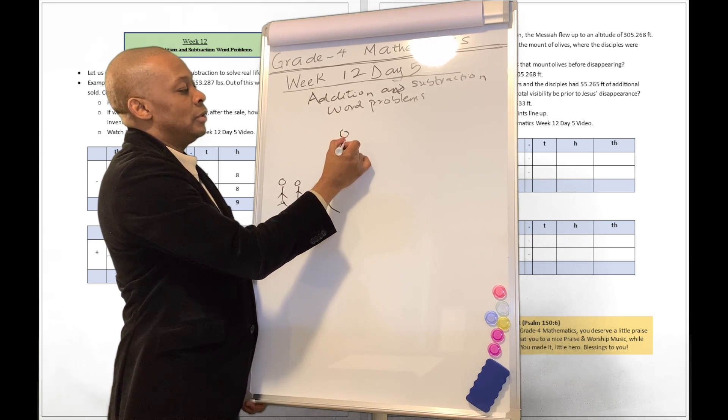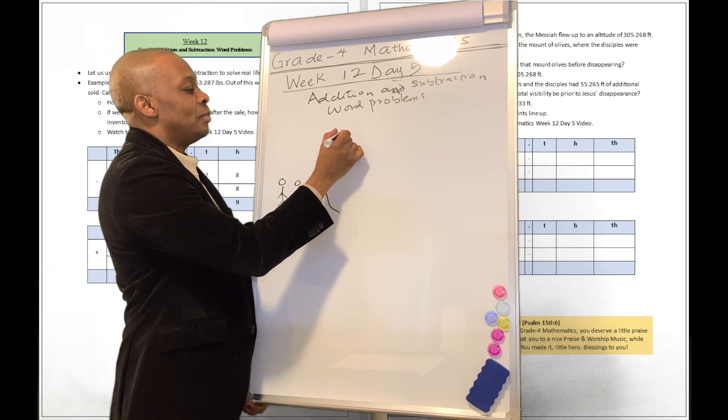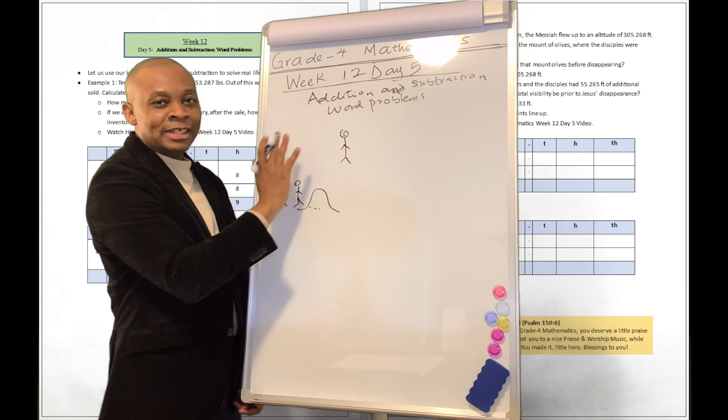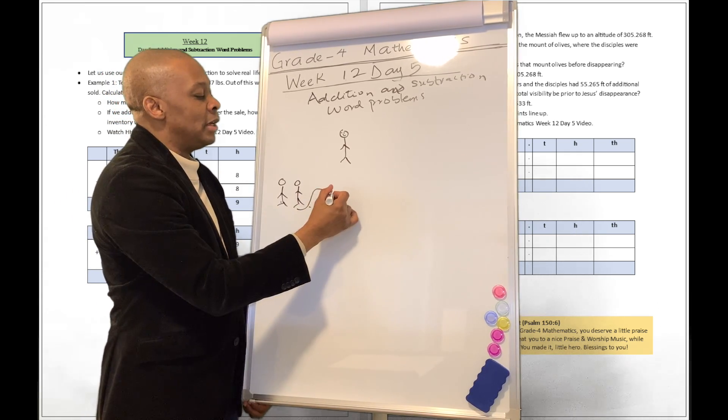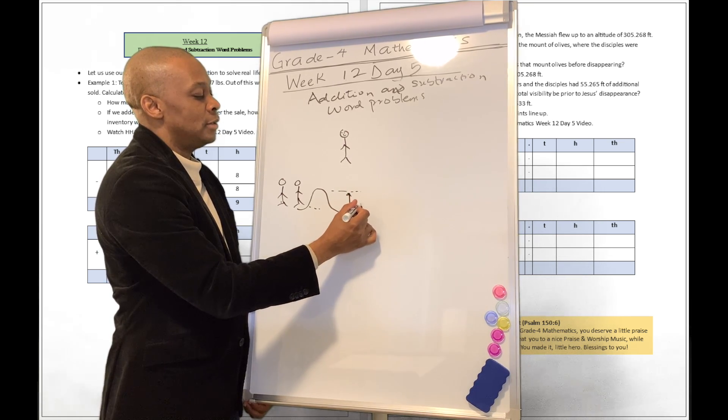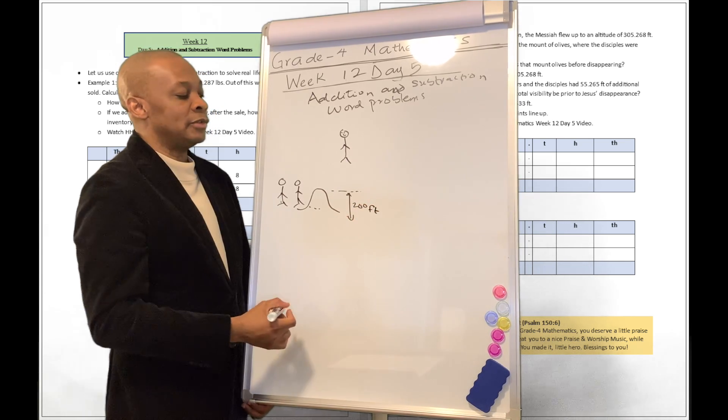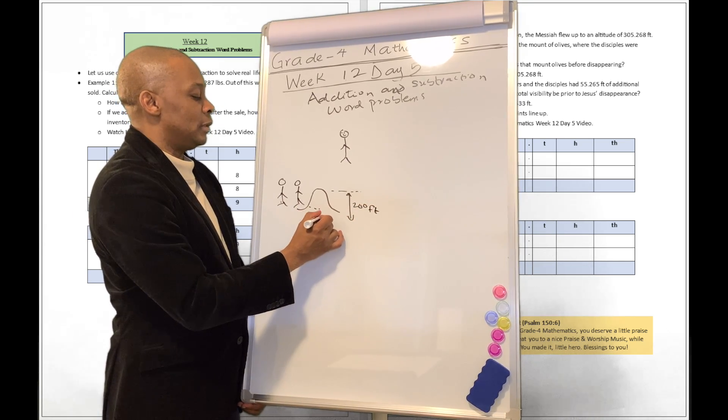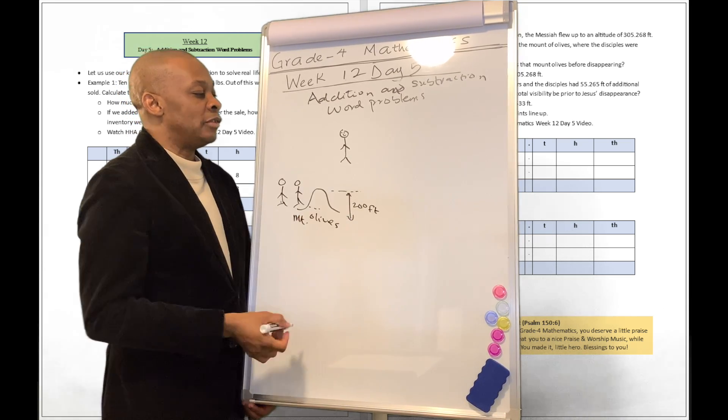And here is Jesus. Jesus is like floating away to the clouds because Jesus resurrected and he's waving and he says, bye-bye. Hey guys, I'll see you later. And they told us that the Mount of Olives is about 200 feet high. Okay, so that's the Mount of Olives over there. Mount of Olives, it's about 200 feet high.